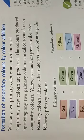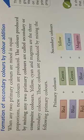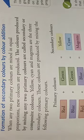Now let us learn about the secondary colors. When two primary colors are mixed, it produces secondary colors. They are also called composite colors.